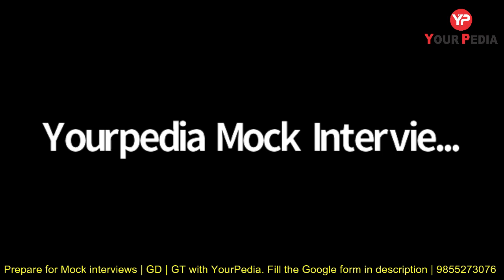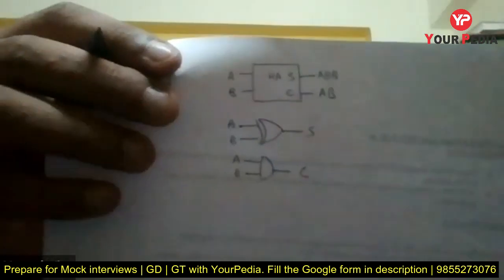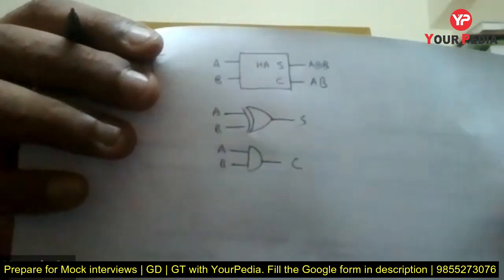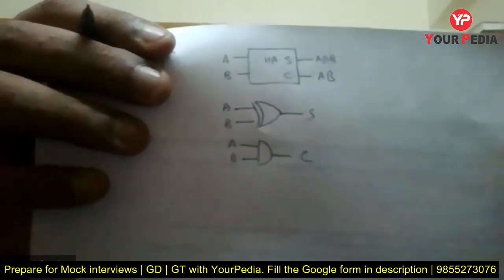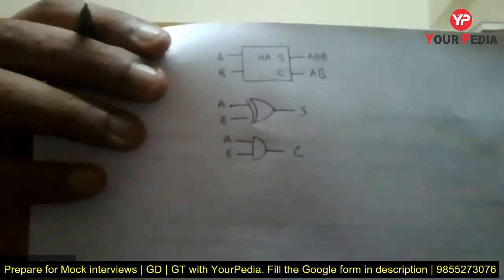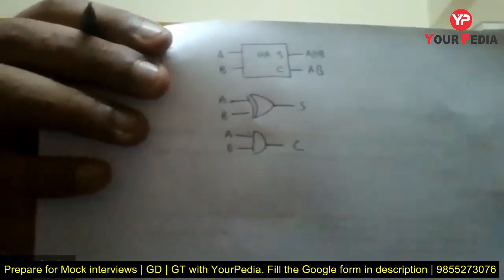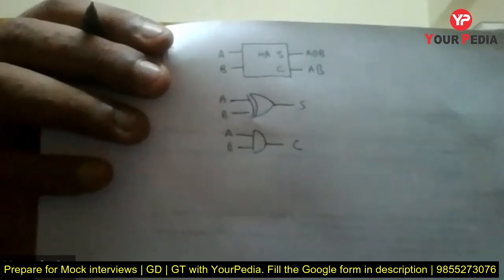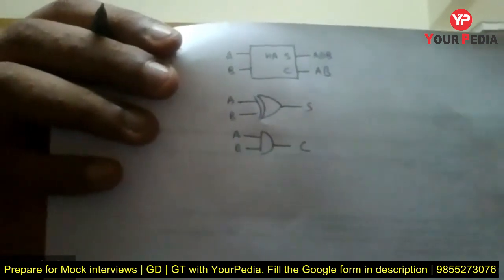So why are you making it separately? Sir, just for the representation so it looks clear, that's why I have written it separately. But actually it has only one input going into both the gates.